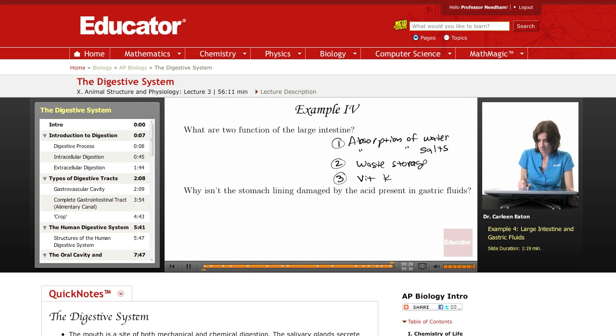And finally, it's a site of vitamin K production. The E. coli in the large intestine produces vitamin K. Site of vitamin K production.